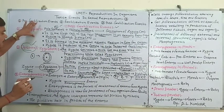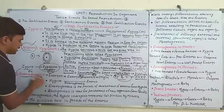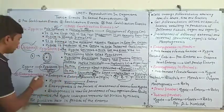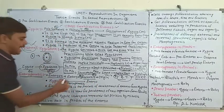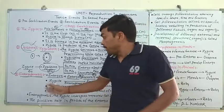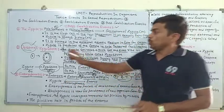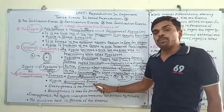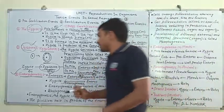अब हम बात करें Embryogenesis की। Zygote क्या है, Oospore क्या है, Oospore से next generation कैसे develop होती है — यह हमने देखा। अब Embryogenesis: जहाँ Zygote या Zygospore बना है और by mitosis से embryo बन रहा है, इसी stage को हम Embryogenesis कहते हैं। Embryogenesis दो शब्दों से बना है: embryon (embryo) और genesis (origin) — यानि embryo का development होना Embryogenesis कहलाता है।